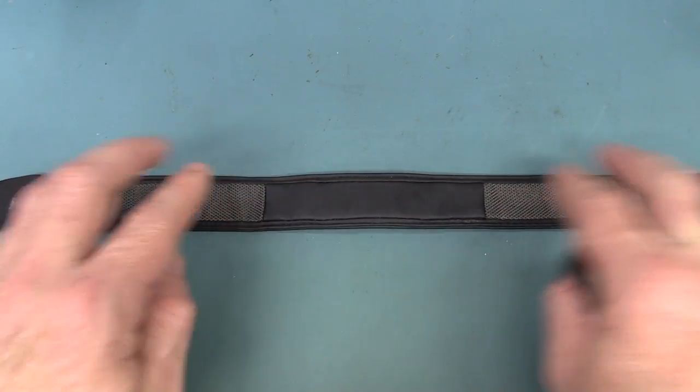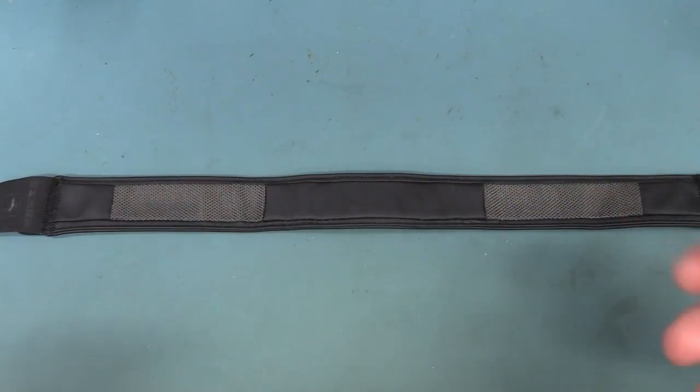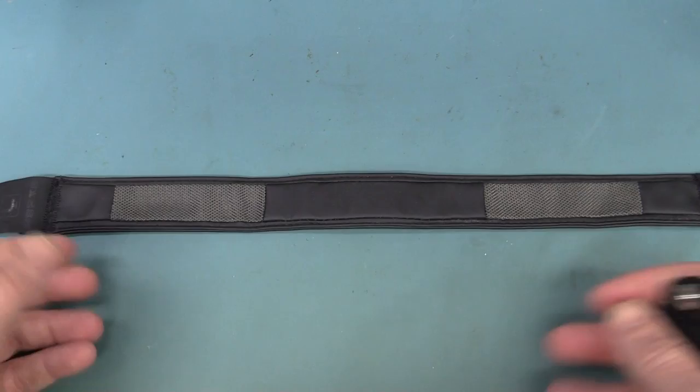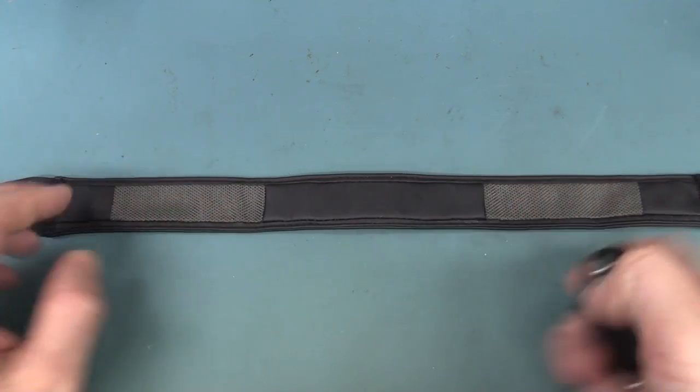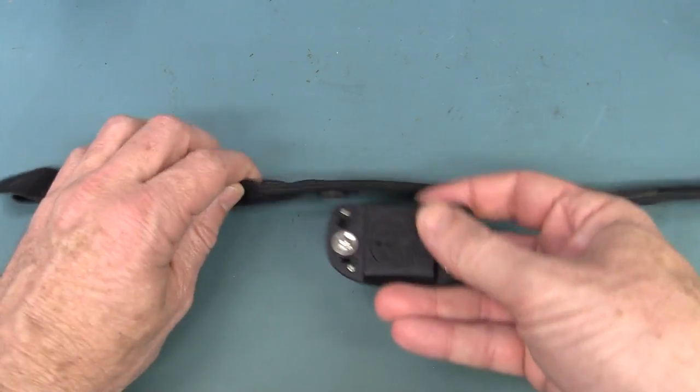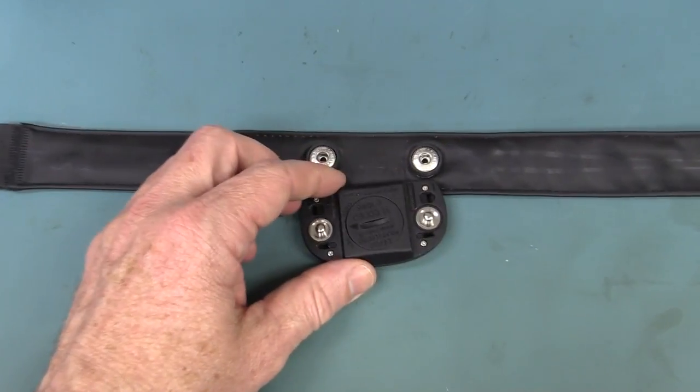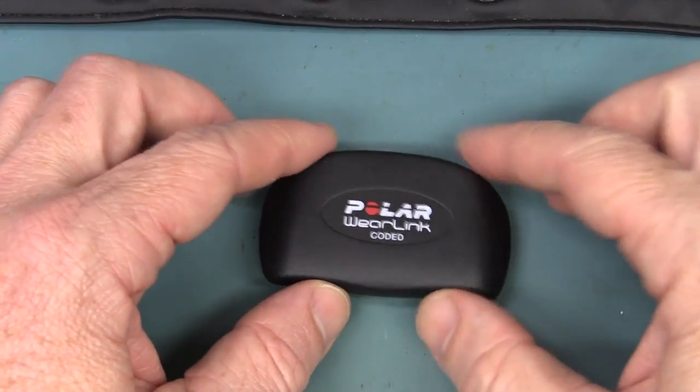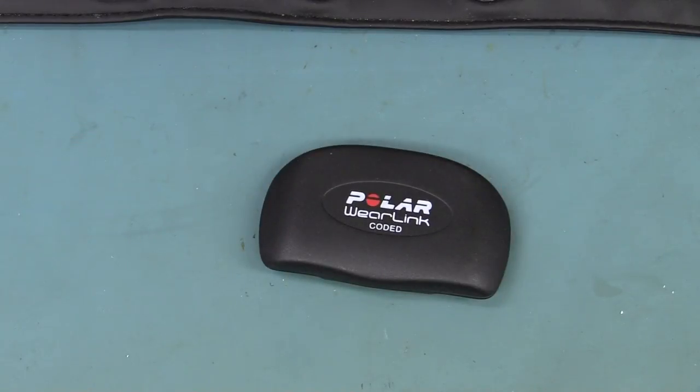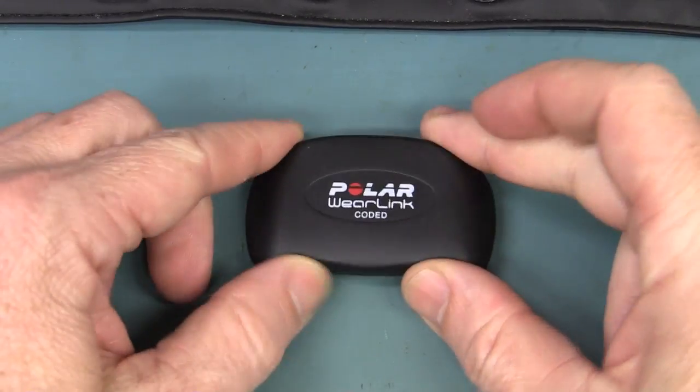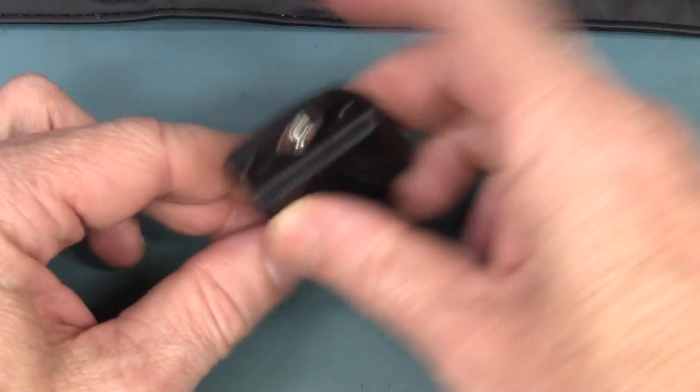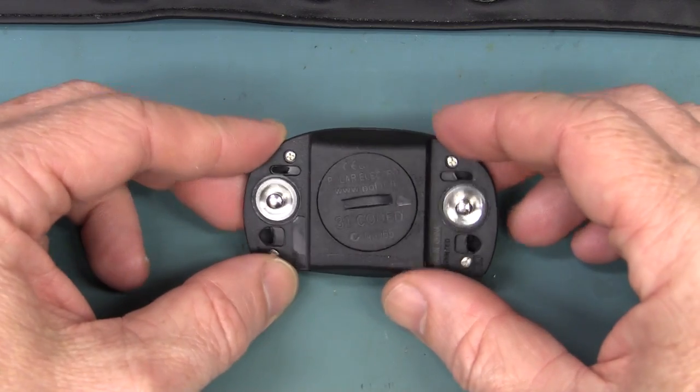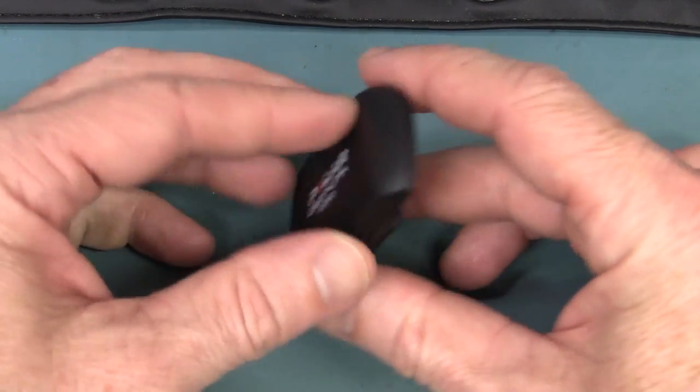And the chest strap contains internal conductors, just going to a conductive fabric type pad here, which you usually have to moisten first in order to get good contact. And once you start exercising and sweating, then you get a decent contact. But that's basically all there is to the thing. This is the wife's one. We've got two, so we can compare them. But I believe it's absolutely identical.